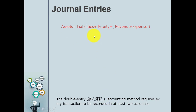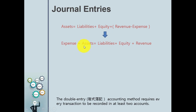We know the equation: Assets = Liabilities + Equity, and net income = Revenues − Expenses. From mathematical logic, we can rearrange these so that Expenses + Assets = Liabilities + Equity + Revenue. From this balance, the amounts on the left side and right side are equal, so we assign the left side as debit and the right side as credit.